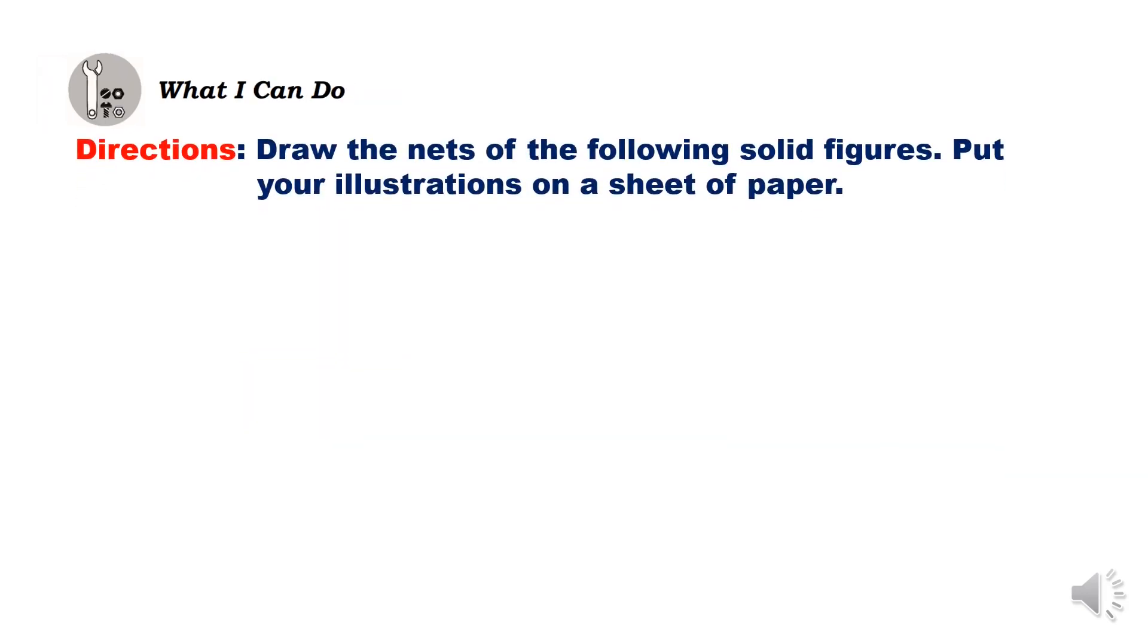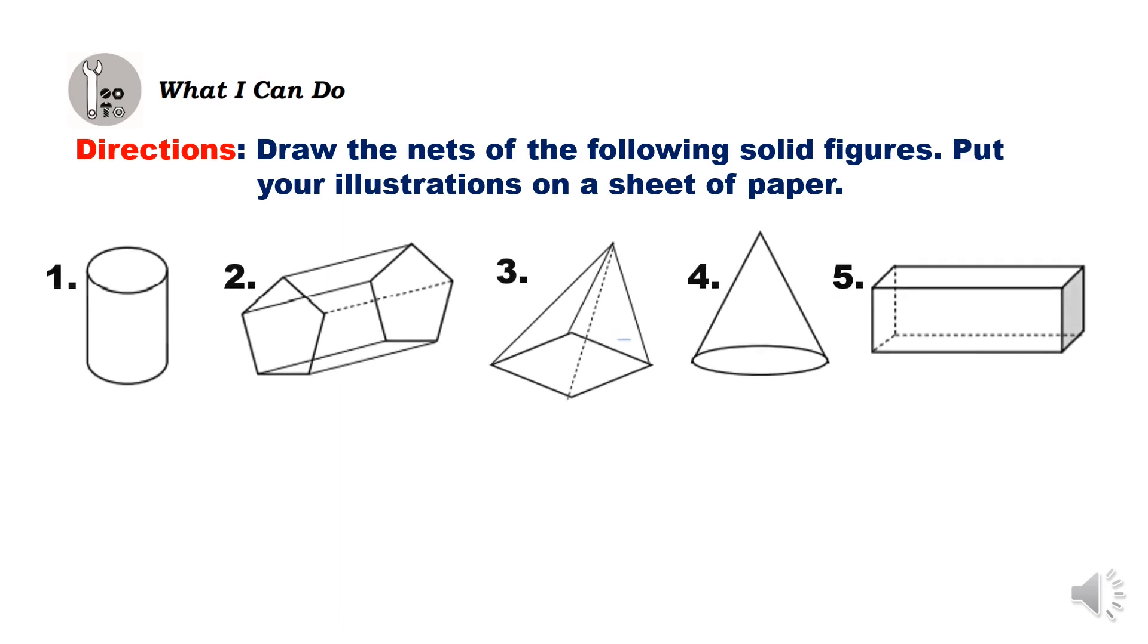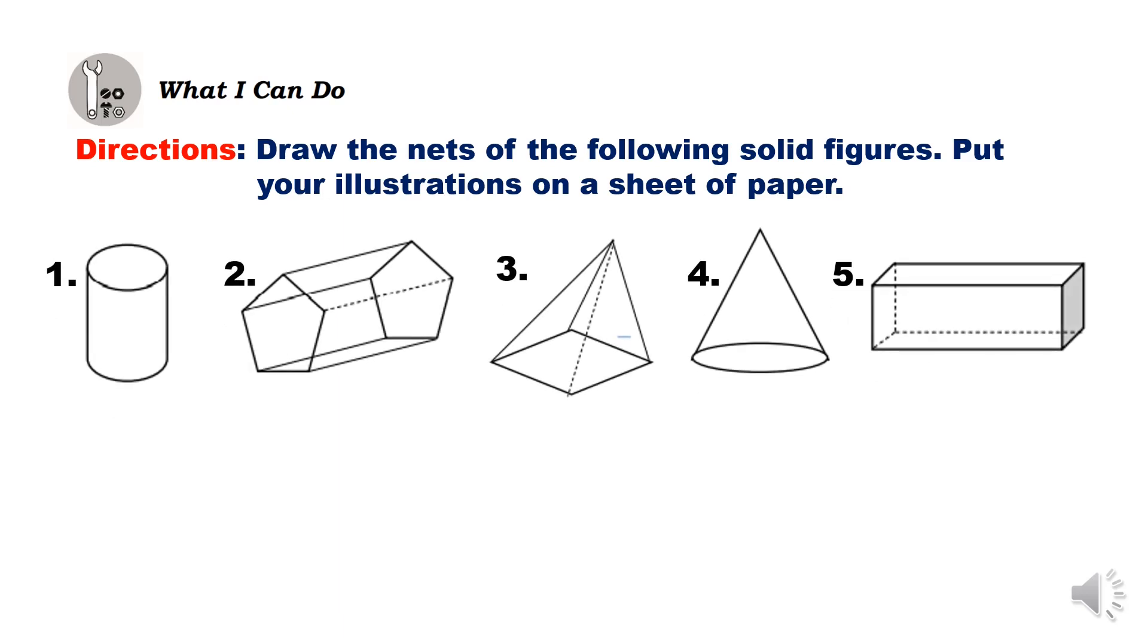Draw the nets of the following solid figures. Put your illustrations on a sheet of paper. For number 1, the net of a cylinder is like that. Then, I'll give you time to answer number 2, 3, 4, and 5.